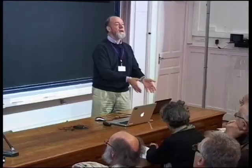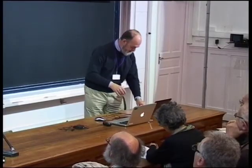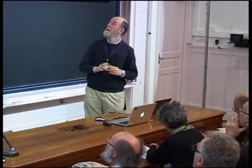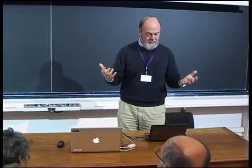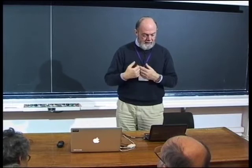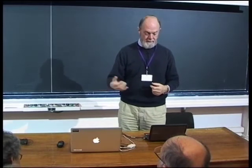It's because Riemann has read the Gauss Nachlass that he discusses functions which he called P-functions, and the notation P is taken from Gauss. He defines them as having three branch points; there's a linear relation between the branches — only three branches satisfy a linear relation with constant coefficients — and the function can be written in terms of what you see locally in the fashion indicated here. So they look very like the solutions of the hypergeometric equation: he has formalized the geometric behavior of the solutions.